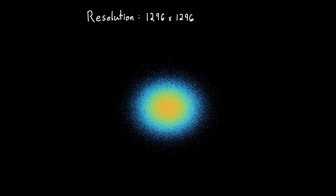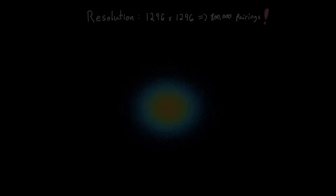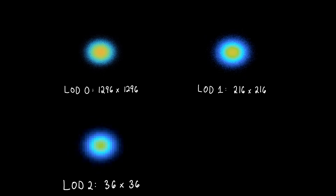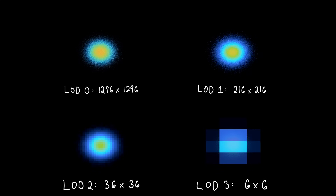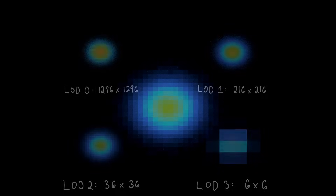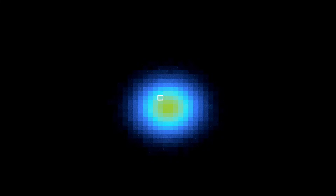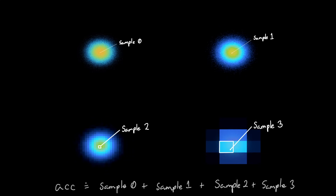However, for a high resolution grid, checking each grid cell with every other grid cell would still be too many interactions to check in real time. So I create multiple grids of various sizes, where each subsequent grid is a down sampling of the previous. For each grid cell, interactions are only computed with its neighbors within the surrounding 11 by 11 region. Then the acceleration due to gravity acting on each particle becomes a combination of the samples from each level of detail.